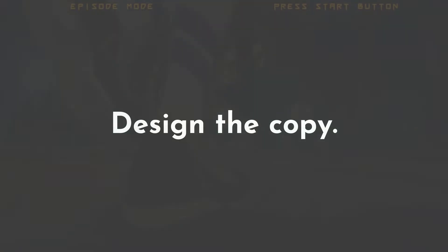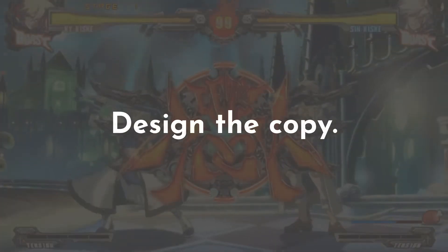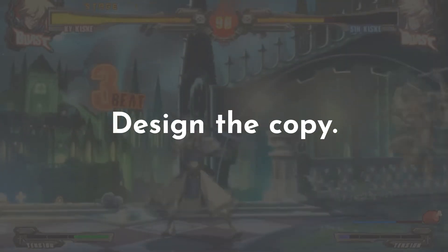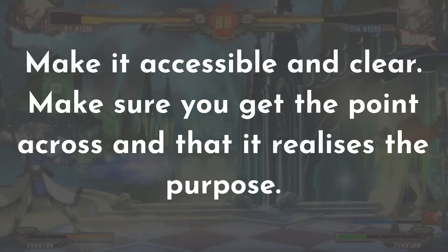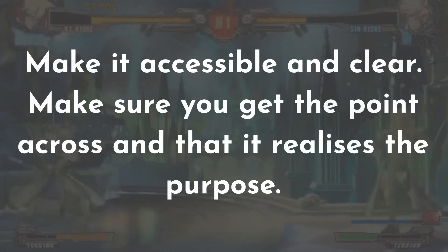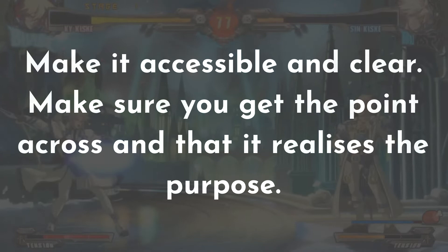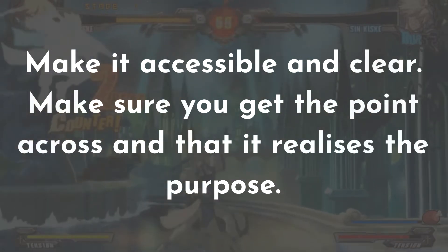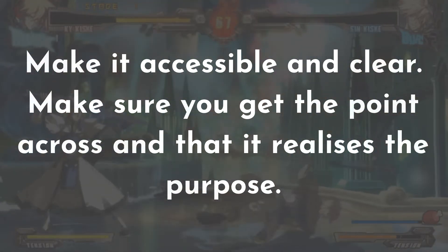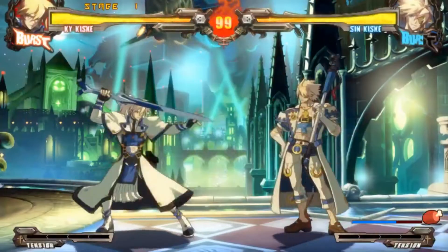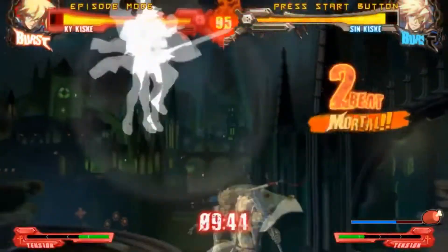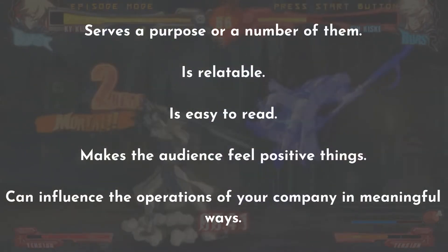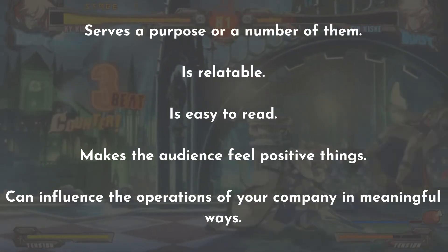Fifthly, design the copy. We sometimes procrastinate or have a lot of stuff to take care of, but you need to keep in mind that the sooner you get your copy written, the faster you will be able to do other stuff. So don't slack off — it's not gonna write itself. Sixthly, make it accessible and clear. Make sure you get the point across and that it realizes the purpose. This can be summed up in three words: simplification and proofreading. Repeat as many times as needed to achieve the goal. Maybe have a colleague read it — it's usually a good idea to ask for a third person's perspective. After doing all of this, you should end up with a copy that serves a purpose, is reliable, is easy to read, makes the audience feel positive things, and can influence the operations of your company in meaningful ways.